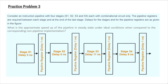Welcome to pipeline practice problem 3. Consider an instruction pipeline with four stages S1, S2, S3, and S4, each with combinational circuit only. Pipeline registers are required between each stage and at the end of the last stage. Delays for the stages and pipeline registers are given in the figure. We need to calculate the approximate speed-up of the pipeline in steady state under ideal conditions compared to the non-pipeline implementation.